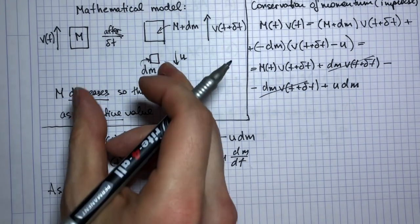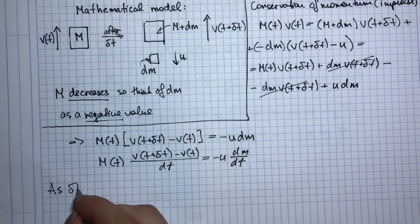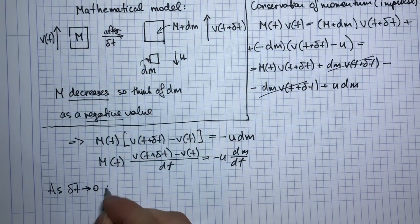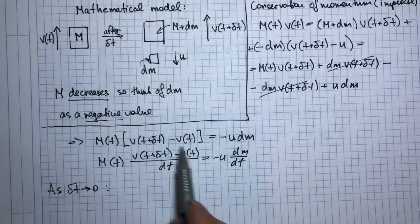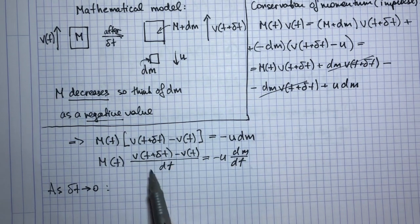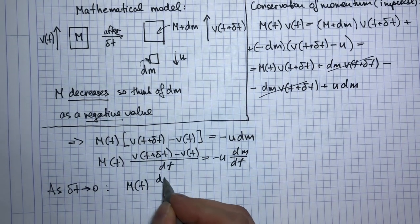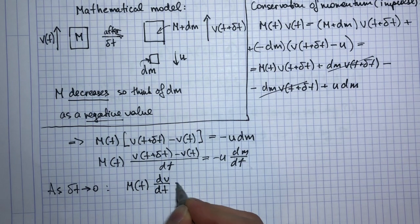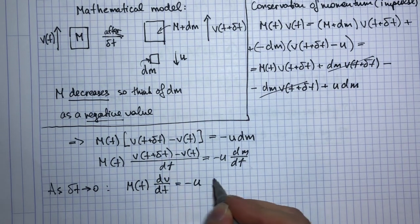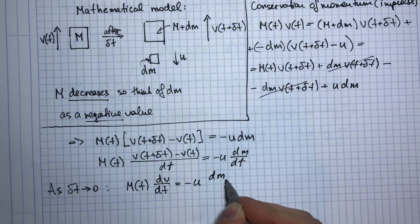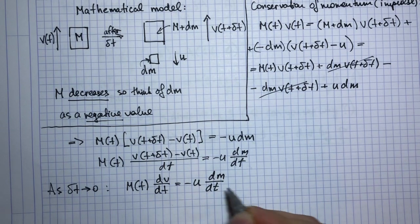So now this is the important step. As I decrease my time increment, this fraction of course becomes a derivative by definition. So I get dv/dt equals minus u times dm/dt. So this is the differential equation that we need to solve.